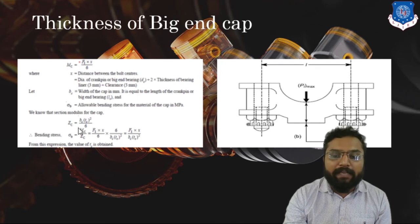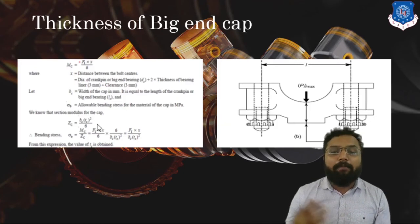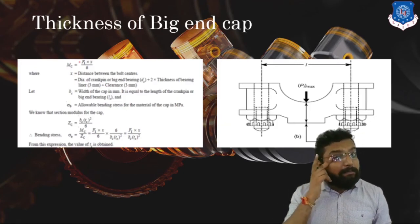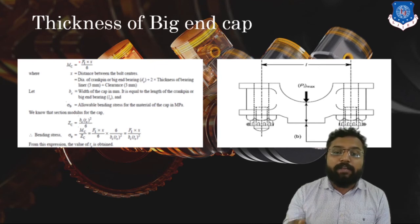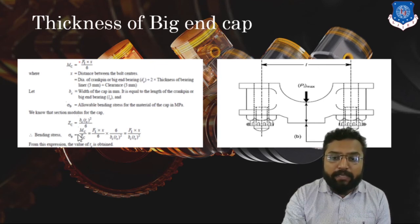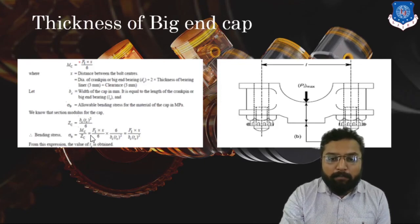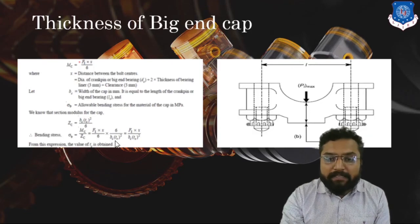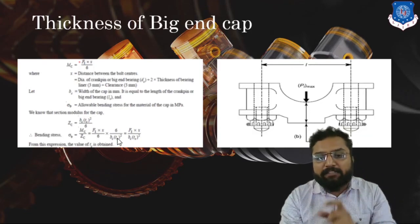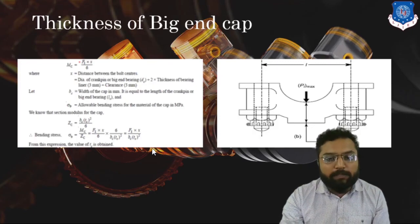From this moment, we can find the section modulus using M/I = σ/Y, so section modulus Z = M / σ. Stress = moment / section modulus. Here moment is F1 × X / 6, where F1 is the force generated by the reciprocating mass. Z = B × t² / 6, where B is the base of the big end cap and t is its thickness. Ultimately we can find the thickness of the big end cap.